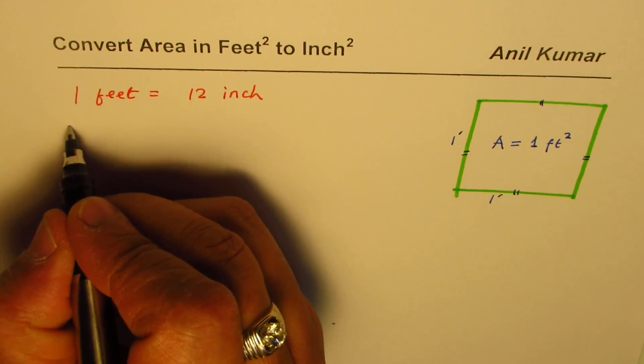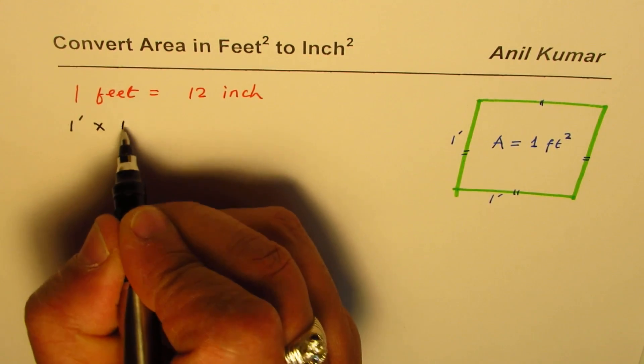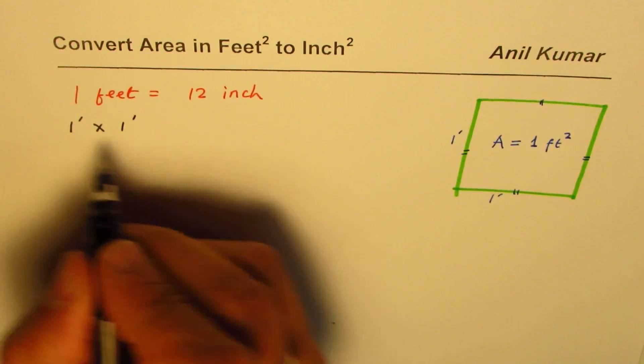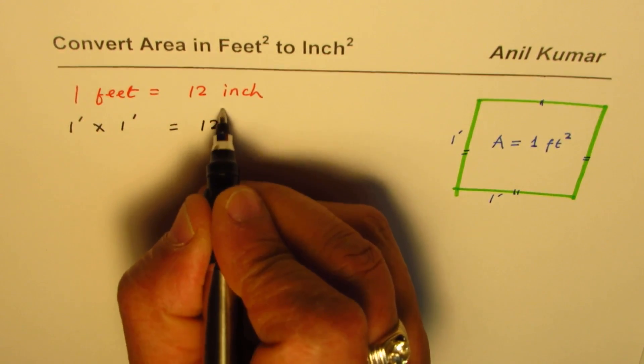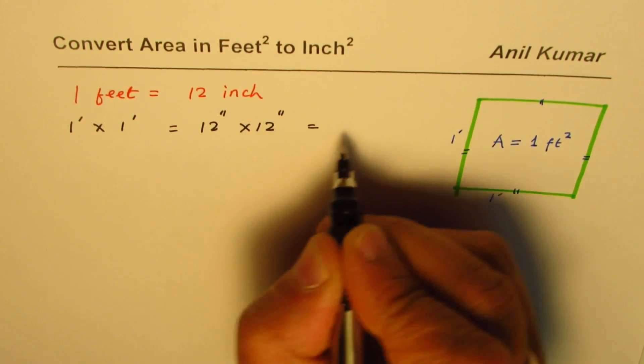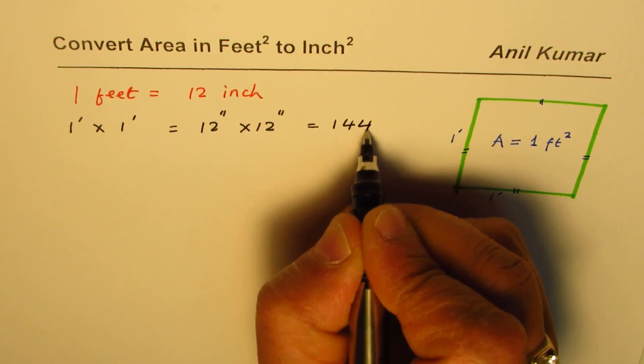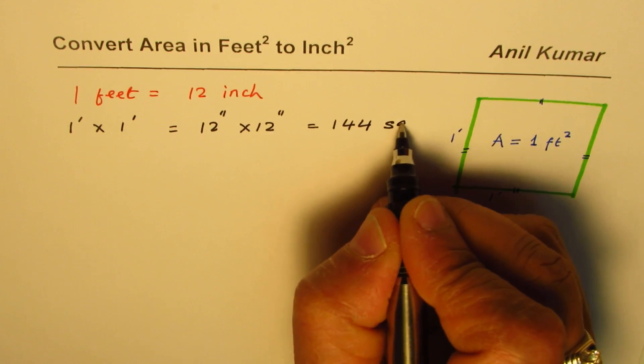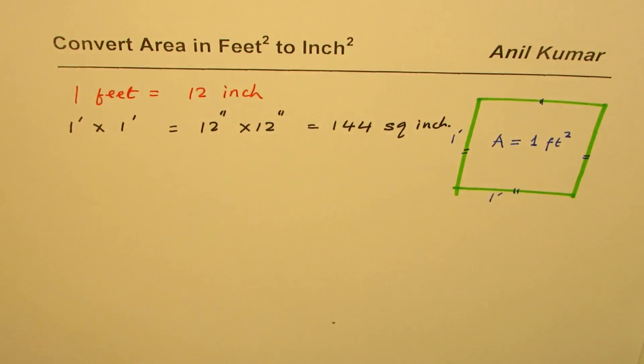We're doing one foot by one foot, which can be written as 12 inches by 12 inches. 12 times 12 is 144, so we get 144 square inches.